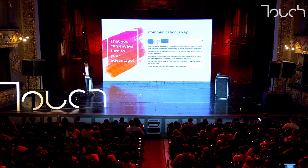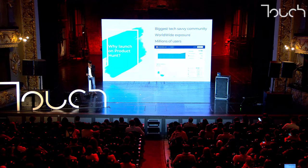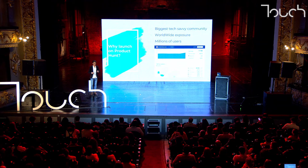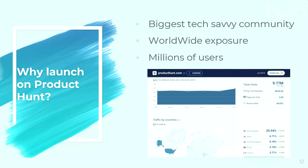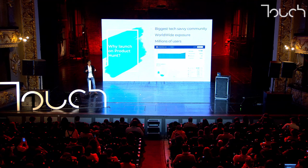Now let's talk about Product Hunt. For those who don't know it, it's the biggest tech-savvy community worldwide. Every day, people launch their products there. There are millions of users — about 10 million in traffic every month. By the way, you can check the traffic of pretty much any website using a free tool called SimilarWeb. On Product Hunt, people vote for the best product every day, and the best products go into their newsletter, which has more than a million subscribers. It gives you tons of visibility and you don't spend any money on it.